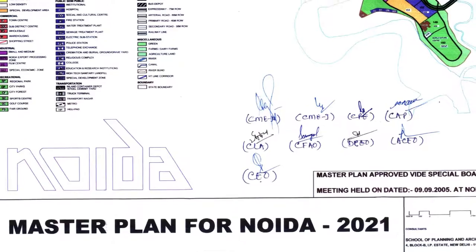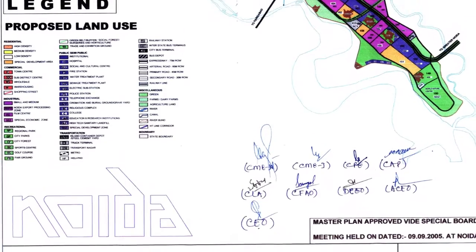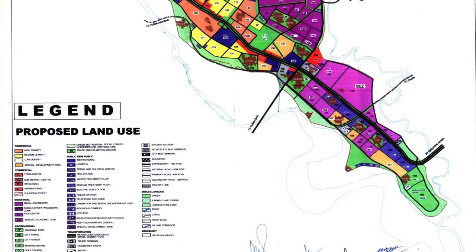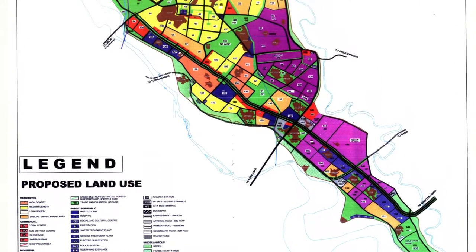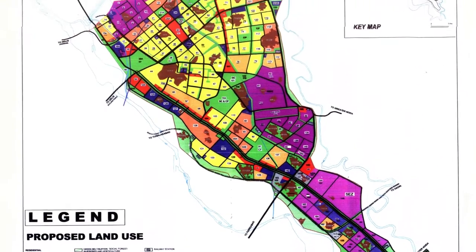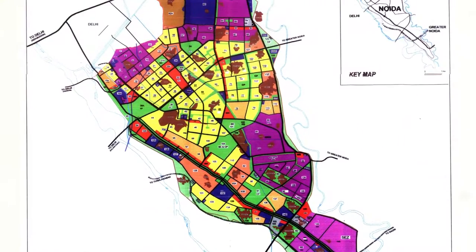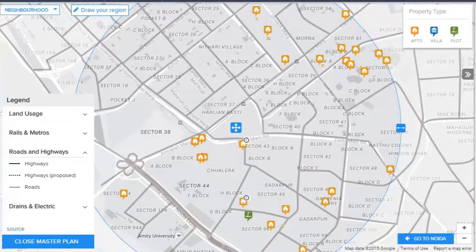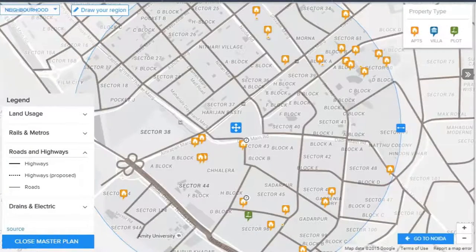Hi everyone. I'm here to talk to you about master plans. A master plan is a planning document by local urban governments to guide the economic development of a city. A master plan has a comprehensive plan to guide the future development of the city.